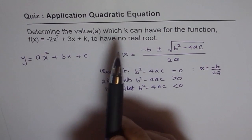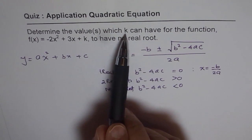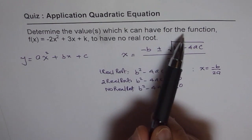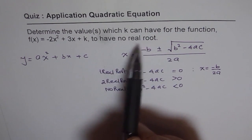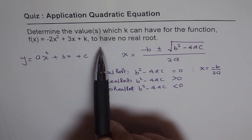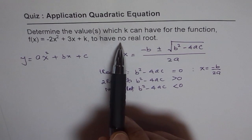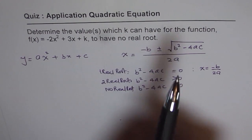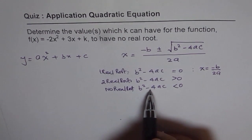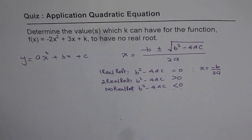The question is, which k can have for the function this to have no real roots? We are looking for the values of k which will result into no real roots. That means this condition: b² - 4ac should be less than 0 for the given equation. That is what we are trying to answer.